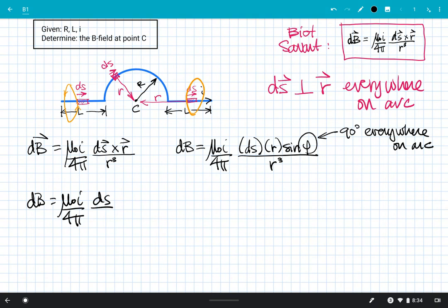The magnitude of the cross product is going to be DS times R times the sine of the angle between them. That's what a cross product is. The angle between them everywhere here is going to be 90 degrees.